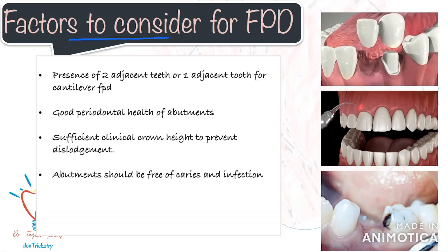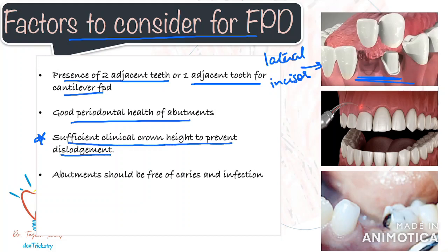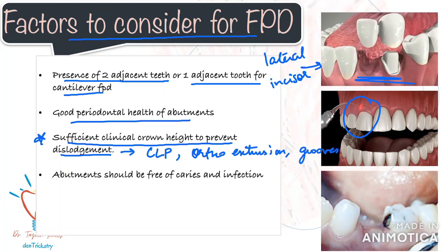Some factors to consider before going ahead with FPD preparation. First, you need support from two adjacent teeth on either side of the space to replace one tooth. The only documented exception for a cantilever FPD permitting a single abutment is the replacement of a maxillary lateral incisor with the canine as an abutment. Second is the periodontal status of the abutment — if the teeth are mobile or severely compromised with bone loss or pockets, they won't serve as good abutments. Third, a lot of people report constant dislodgement of their FPDs, mostly because of inadequate crown heights. If crown height is not sufficient, it will lead to dislodgement, and may need additional procedures like crown lengthening, orthodontic extrusion, or creation of grooves for improving retention.